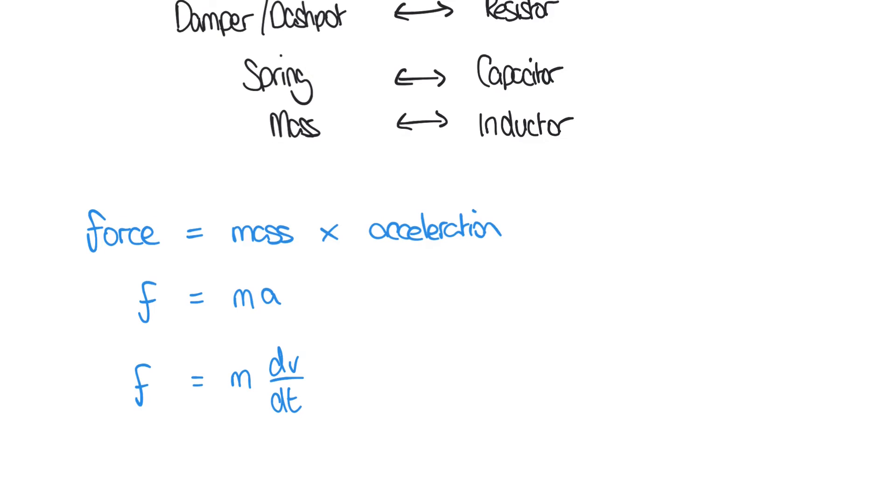At this point, let's revisit the describing equation for the inductor that we saw in the previous section. VL equals L di by dt.